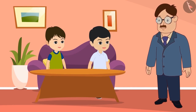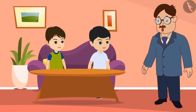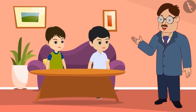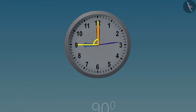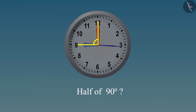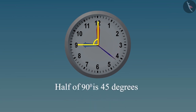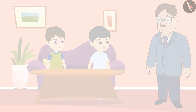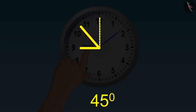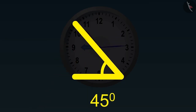Yes, Golu, you are absolutely correct. Look here, children — the angle in the clock is now 90 degrees. Can you tell me what is half of 90 degrees? Half of 90 degrees is 45 degrees. Yes, this is half of 90 degrees — that is a 45 degrees angle.